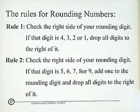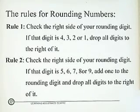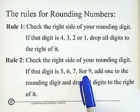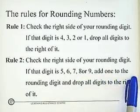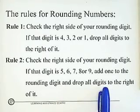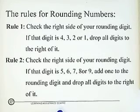Rule 2 is: check the right side of your rounding digit. If that digit is 5 or more — so 5, 6, 7, 8, or 9 — add 1 to the rounding digit and drop all the digits to the right of it.